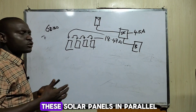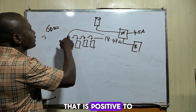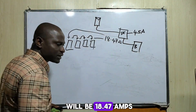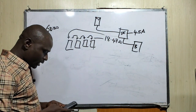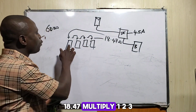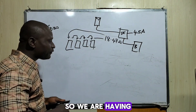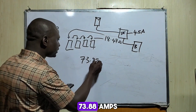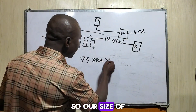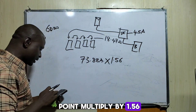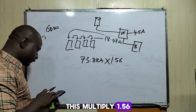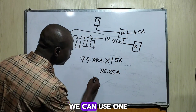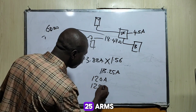But if we connect those four solar panels in parallel — positive to positive, negative to negative — the total short-circuit current becomes 18.47 × 4 = 73.88 amps. Multiplied by the safety factor of 1.56, this gives 115.25 amps. So we can use a 120-amp or 125-amp breaker.